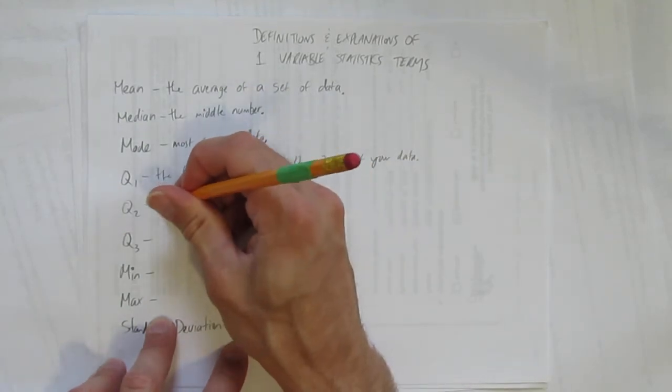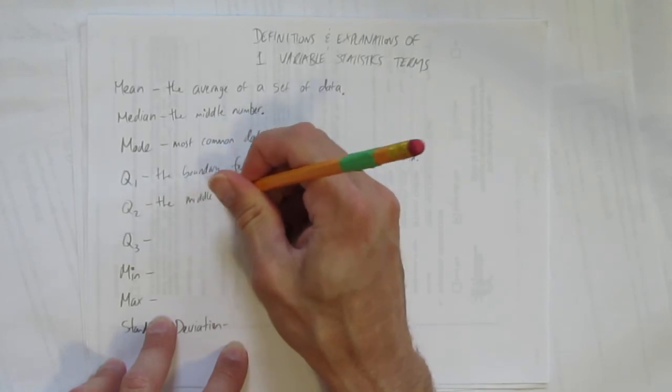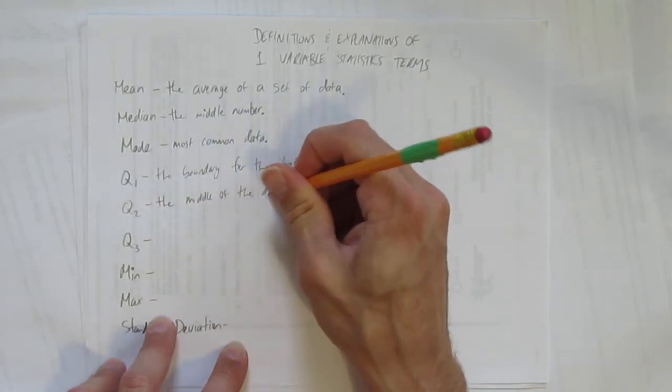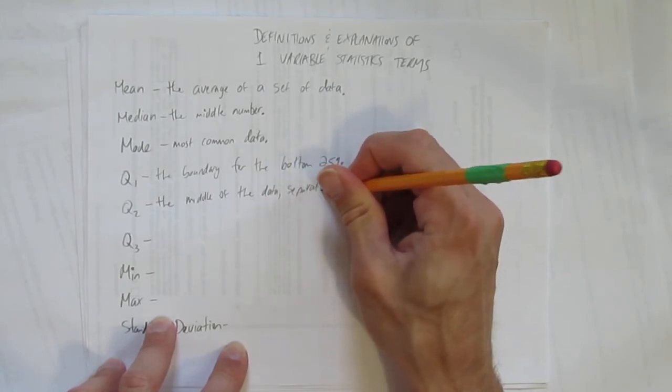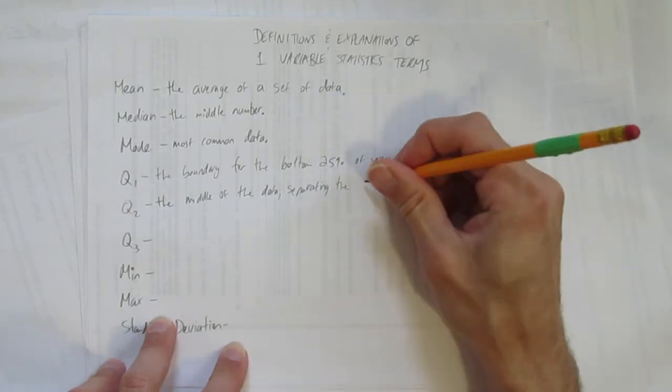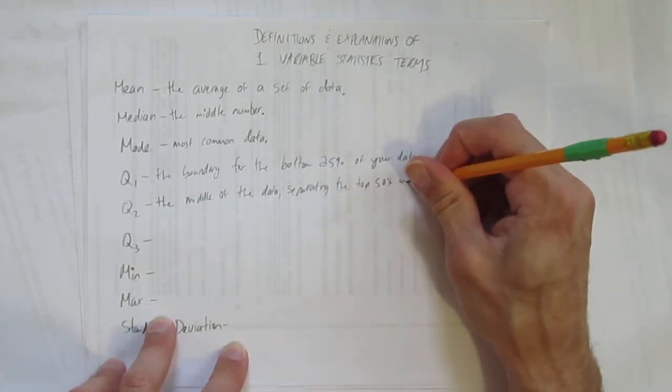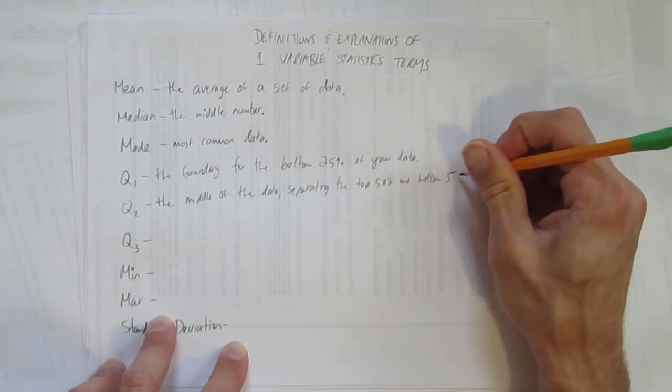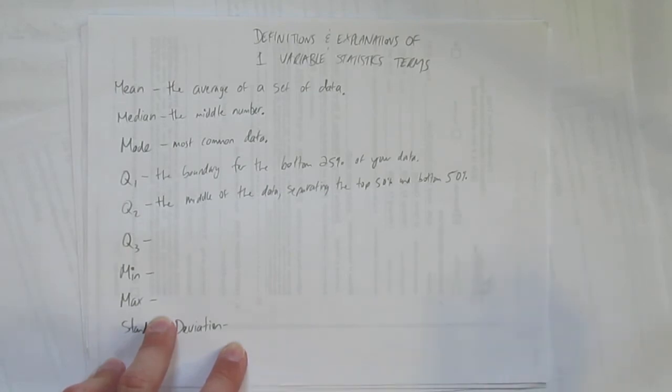Q2 is the middle. It's going to be the middle of the data, separating the top 50% and bottom 50%. It's a super long definition, but really, explanation, it's just the median. The median is Q2, and Q2 is literally the median. That is, it's the middle of the data that separates the top half and the bottom half.